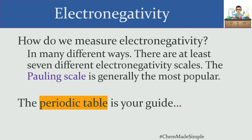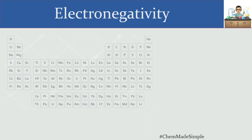So how do you figure out general electronegativity trends? Take a look at the periodic table. Here's a way to see which elements are more electronegative and which are less electronegative just by looking at their position. I'm going to write down a bunch of letters that indicate the area of highest value for particular properties.